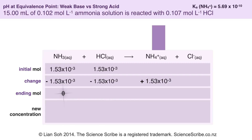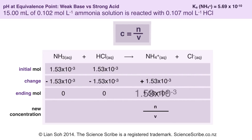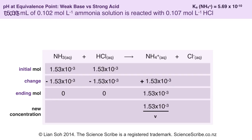I can update the ICE table, which tells me that at equivalence point all I have left is ammonium ions. To work out the concentration of ammonium ions using C = N/V, I've already worked out the moles, but I don't know the total volume in the flask yet. I started with 15 mL of ammonia solution and added some volume of hydrochloric acid, so I need to work out what that volume of HCl was.